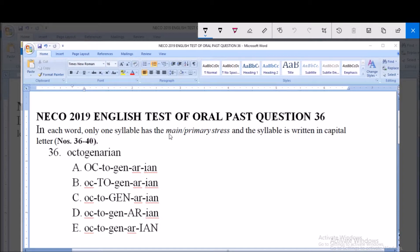We want to look at the position of the main or primary stress in this word called octogenarian. Where the stress falls, that is what we want to look out for. By the time you pronounce this word very well, in option A, OC is capitalized.